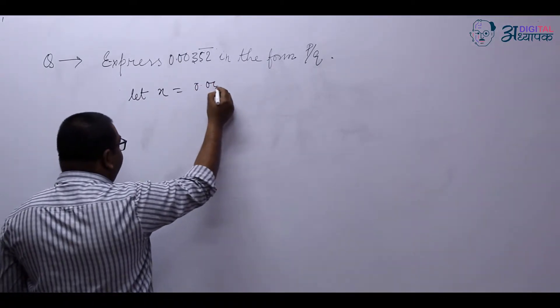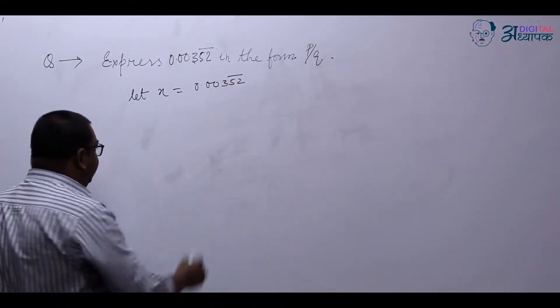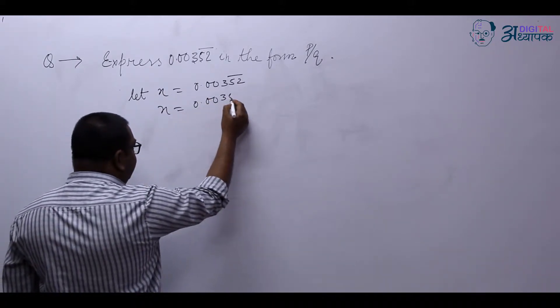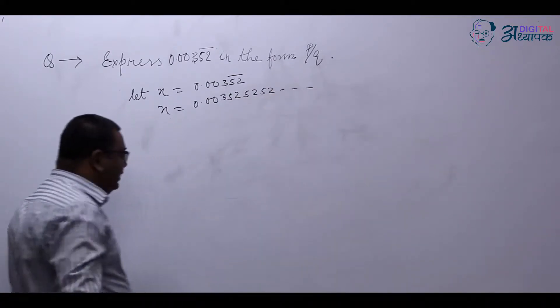So let x equal 0.00352 bar on 52, which becomes x equals 0.003525252 and so on.